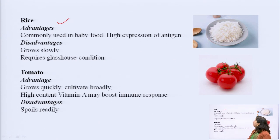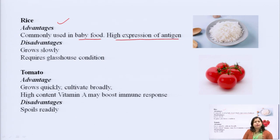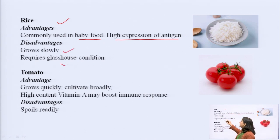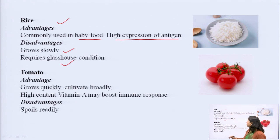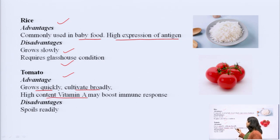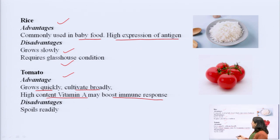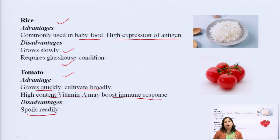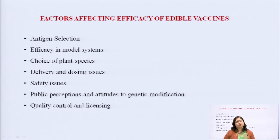The third example is rice. Rice can be given in the form of baby food to give immunity to babies and has good expression of the antigen - the study said the expression of antigen is very good in rice. However, the disadvantages are that it grows very slowly, requires greenhouse conditions for growth, and again rice needs cooking. Tomato again grows quickly, is cultivated broadly, and has a high amount of vitamin A which further increases the immune response - an added advantage. The disadvantage is again that it spoils very fast and has a very short shelf life once produced.